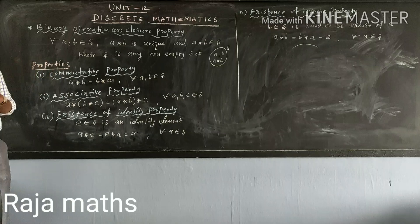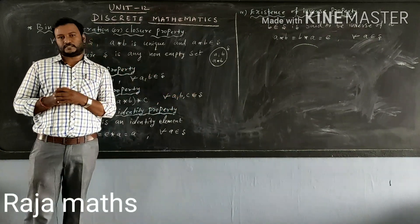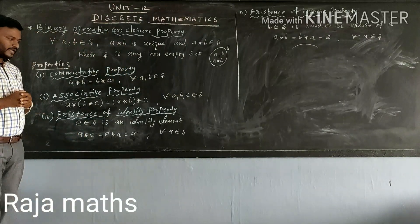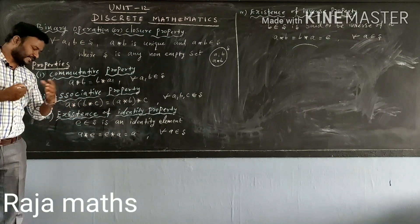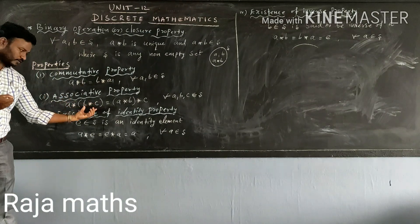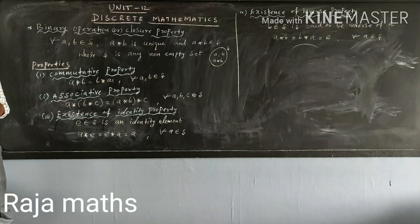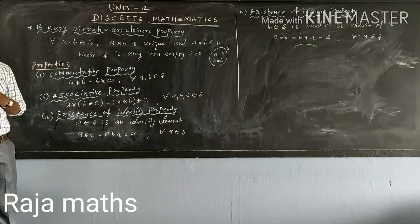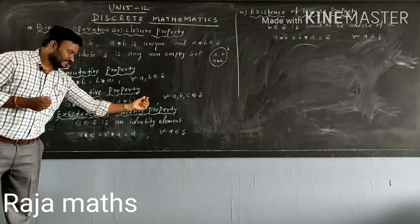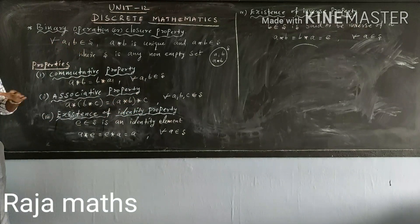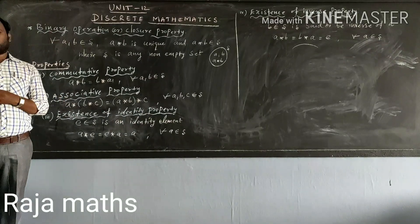That is the associative property. For every a, b, c belonging to S — three elements. The three elements: a star b star c. First, the bracket value is b star c, then star a. We can collect a value. That means a star b is equal to a star c. If we have two values, we can be equal to a value. The associative property is true.